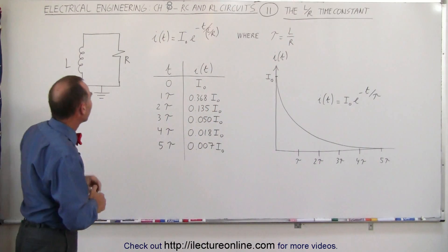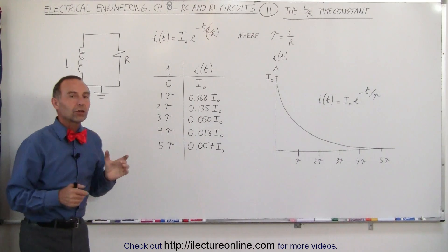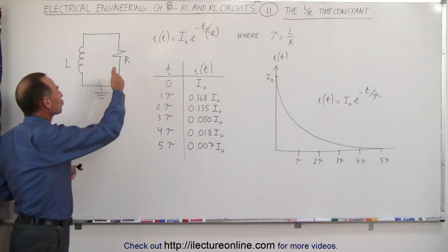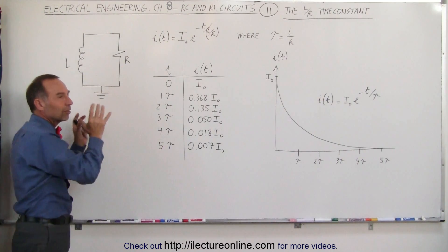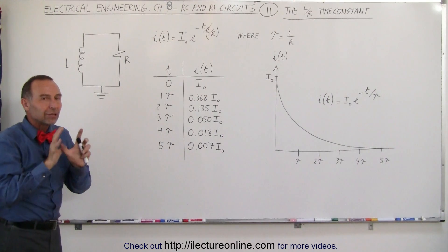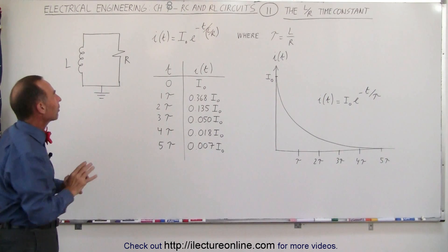What an inductor does in a circuit is it opposes a change in the current. So as the current is trying to diminish itself as it's running through the resistor, and it's diminishing itself because energy is being taken out of the inductor, the inductor is trying to slow that process down.